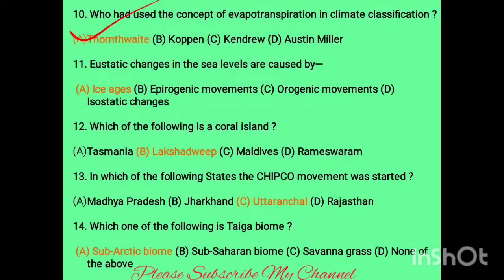Question eleven: eustatic change in sea level at the coast is caused by which option? Options are isostatic changes, epeirogenetic movement, orogenic movement, and eustatic changes. Ice ages are a cause of eustatic changes — option A is the correct answer.